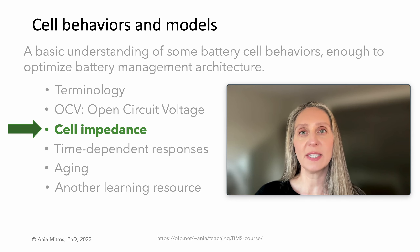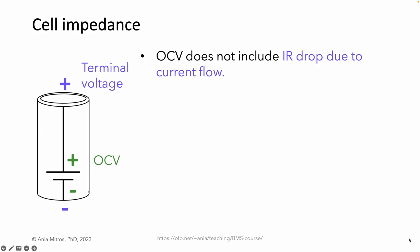Next, we'll move on to cell impedance. Nearly everything has impedance, and cells do too. If you pull a large current out of a cell, its voltage will instantaneously droop, and we can model that with a series resistor. This is one way in which OCV differs from the terminal voltage that we can measure.